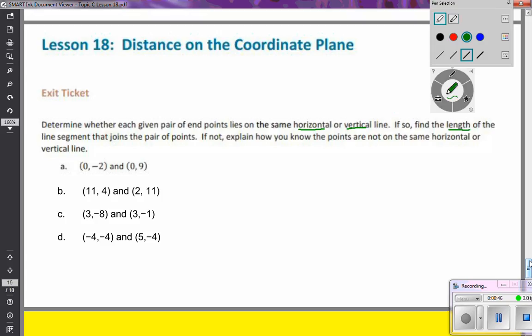So we'll go ahead and we'll start with letter A. We have two coordinates, (0, -2) and (0, 9). Right away, I'm looking and I can see that the x-coordinate is both 0. So if the x-coordinate is both 0, that means that it has to be a vertical line because it doesn't move to left or right at all.